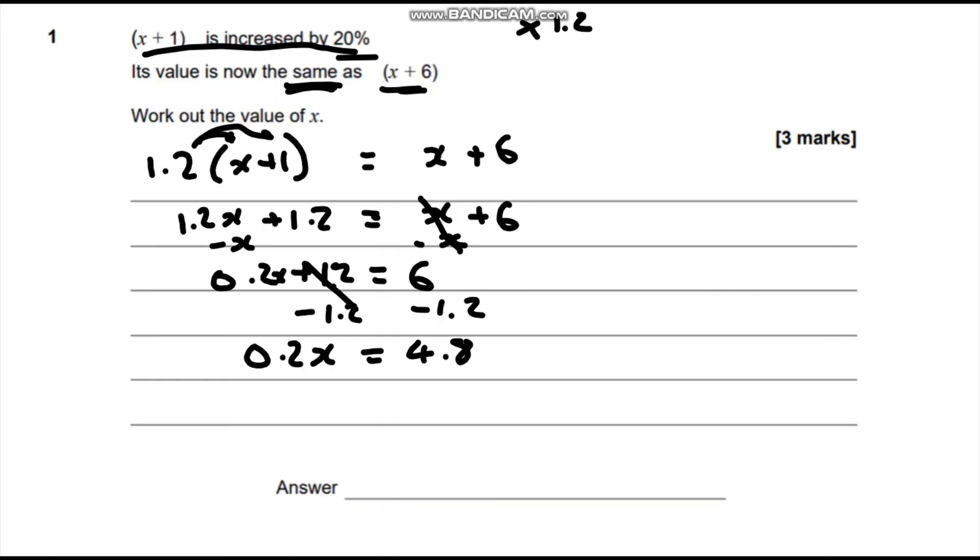If we want to get rid of that 0.2 and have it go up to a 1, we are going to multiply both sides by 5. This will give us x on the left hand side. 4 times 5 is 20. 5 times 0.8 is 4. So we're going to end up with x equals 24.